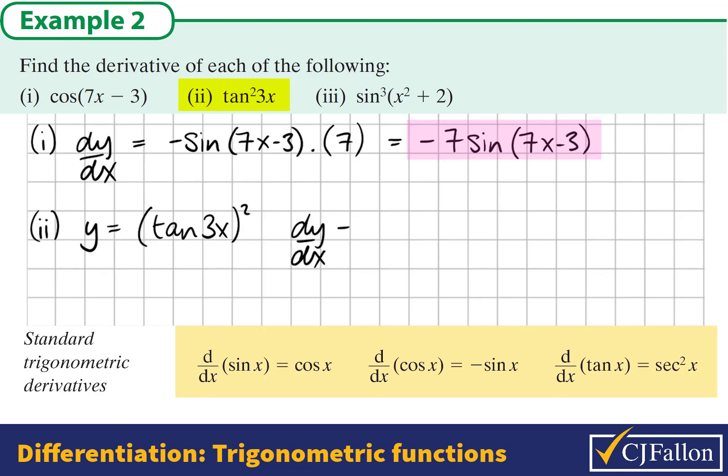The outside layer: multiply by the power, reduce the power by 1, so it becomes 2 times tan of 3x all to the power of 1. Now we multiply this by the derivative of the middle part.